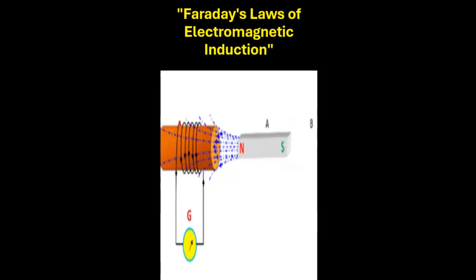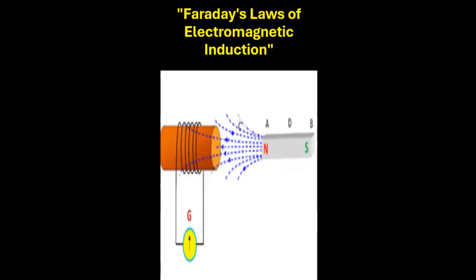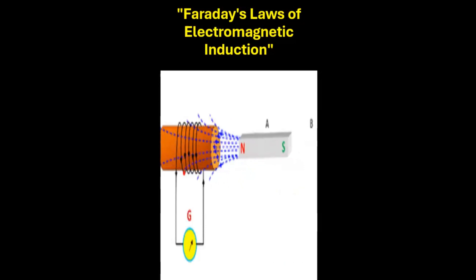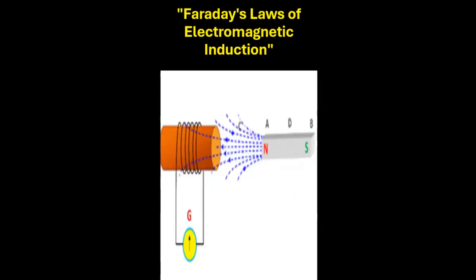Faraday's second law states that the strength of the induced EMF is directly proportional to the rate at which the magnetic field changes. In other words, the faster you move the magnet, or the stronger the magnetic field change, the more electricity you will generate in the wire.